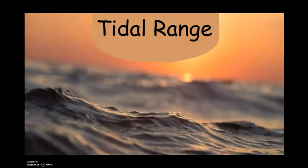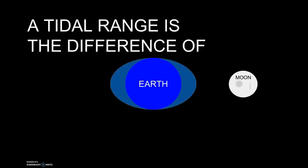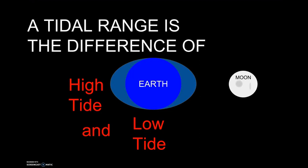This brings us to our next point, which is tidal range. Tidal range is the difference between high tide and low tide. If there's a large low tide and a small high tide, the tidal range is low. If there's a large high tide but a very low tide, then the tidal range is high.